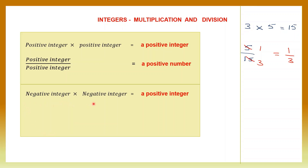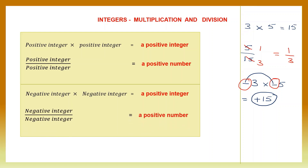A negative integer multiplied by another negative integer gives a positive integer. Let's take the same example: minus 3 into minus 5. When you multiply minus into minus, the sign is plus — 3 fives are 15. So we have got a positive integer even though we multiplied two negative integers. Similarly, when you divide a negative integer by another negative integer, your answer is a positive number.